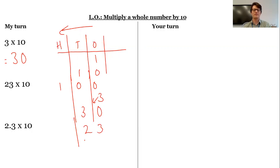Similarly, if we start with 23, well, each digit is going to move one place to the left, because I'm getting 10 times bigger. So I've got now 2 hundreds, 3 tens.